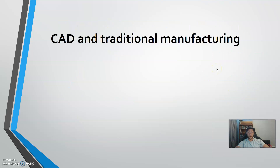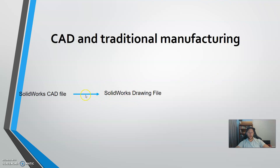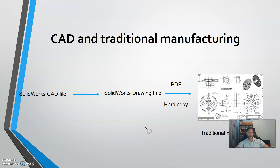CAD is still very prominent in traditional manufacturing — not everything is made with advanced manufacturing. Starting with a file, we're able to draw and communicate our designs in a two-dimensional drawing that can be sent off as a PDF or hard copy print. Still, 90% of what we produce is done with traditional manufacturing, so a drawing is used by manufacturing engineers or production workers to convert your design into a physical product.